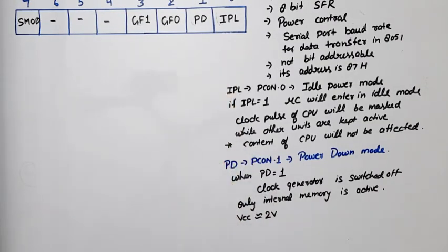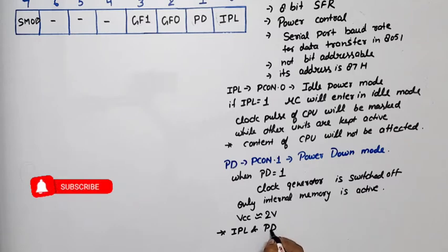Now from this, how did we know that these two bits are used to save the power? By using this we can control the mode of power. Means IPL and PD mode is used to save power in 8051.